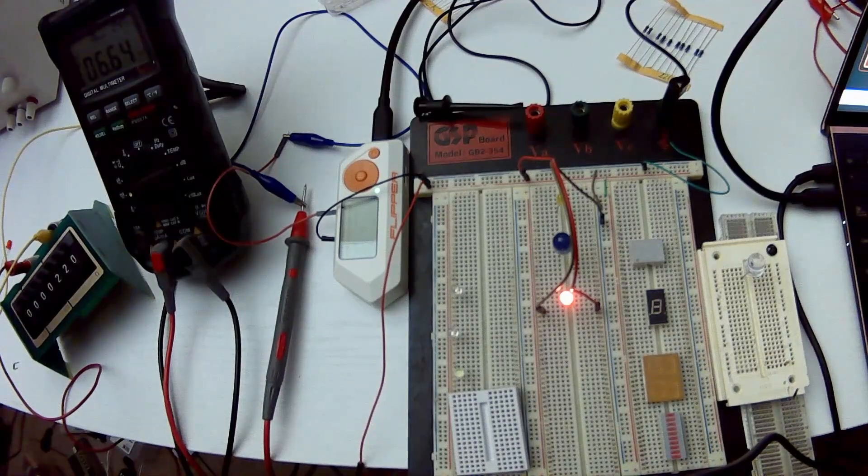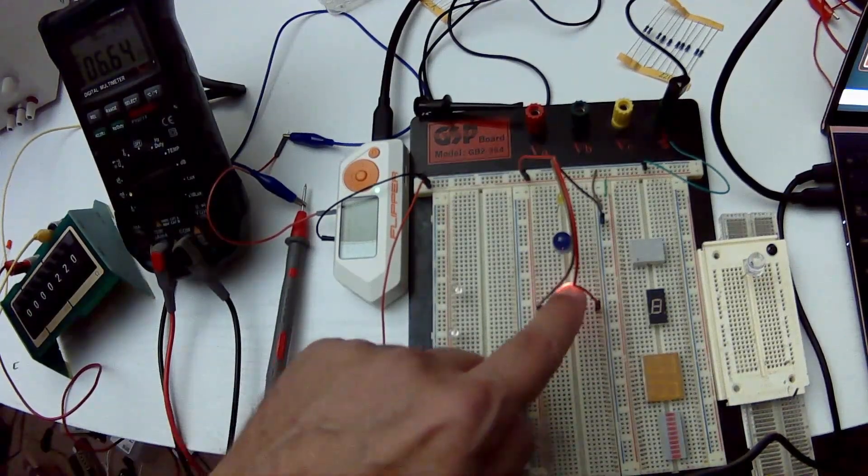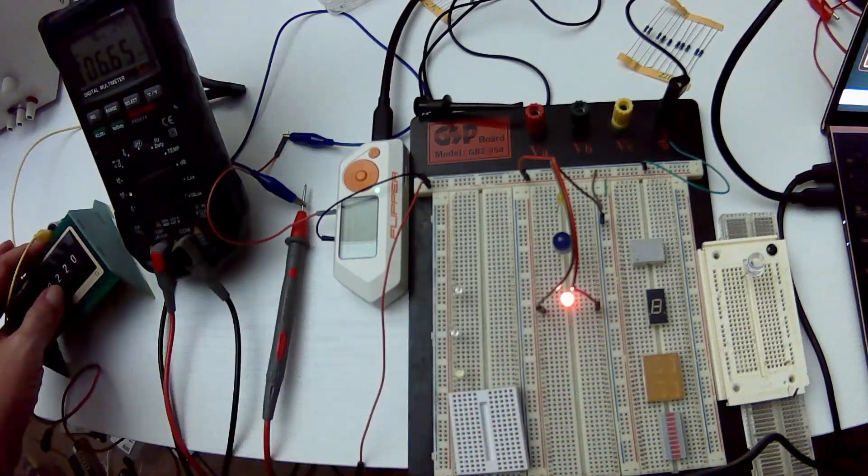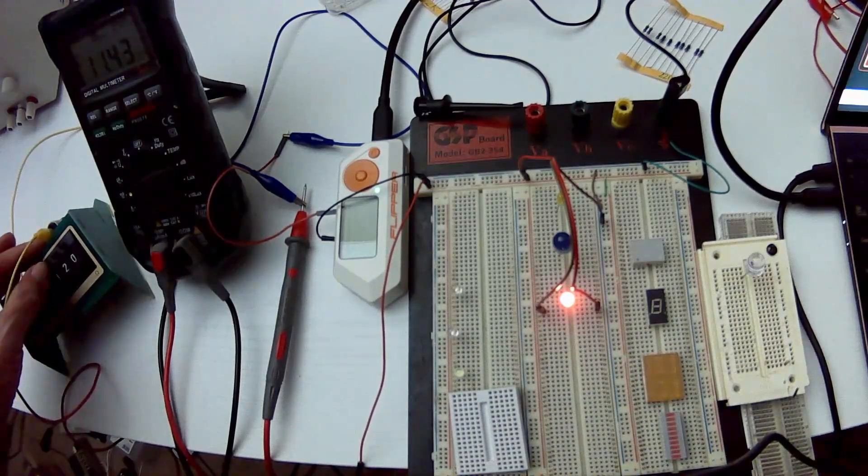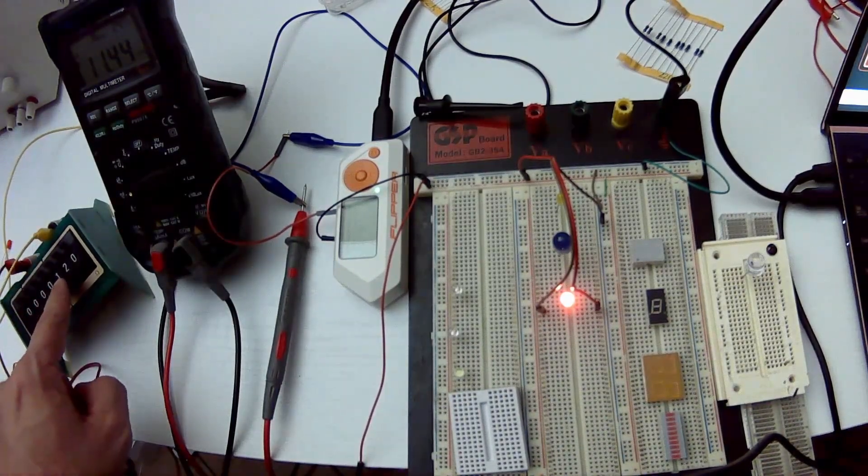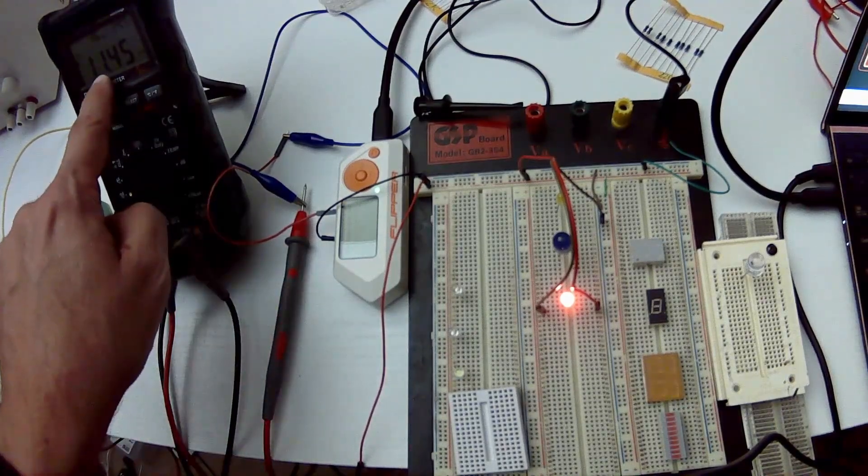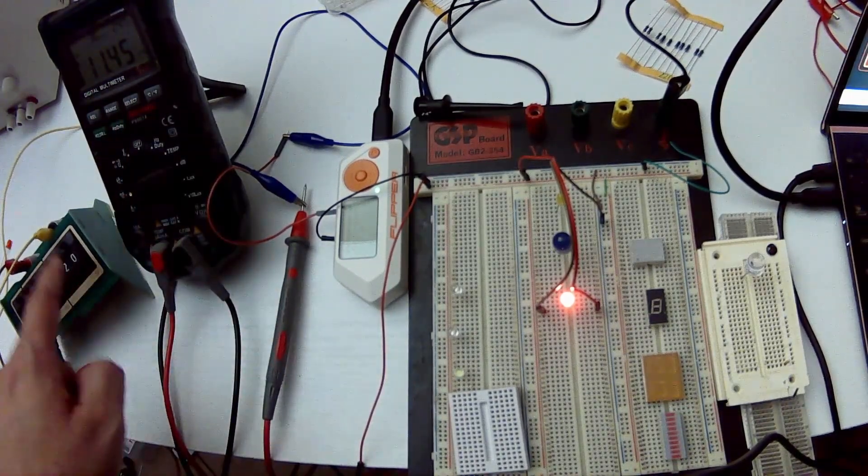So on a 220 ohm, it looks like this is good for 6.6. Let's go ahead and bump it down to 120 ohms just to see. So now we're at 11.44, which is half of the current you're allowed to draw. And less current means longer battery life. So I'd probably recommend 220 if possible.